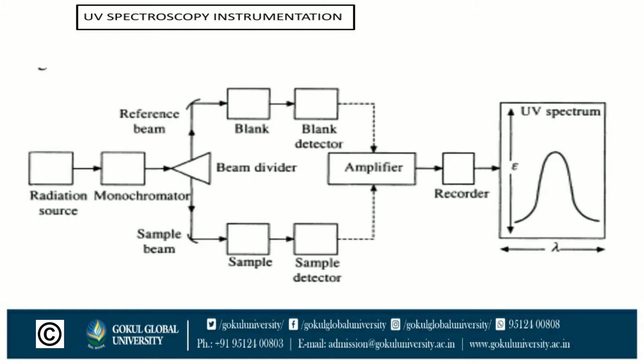Both detected data go to the amplifier, and the amplifier gives data to the recorder. The recorder converts all data into the UV spectrum. This is the general method of UV spectroscopy instrumentation.